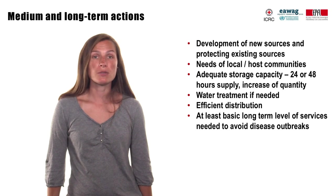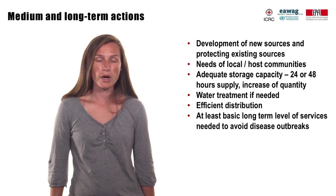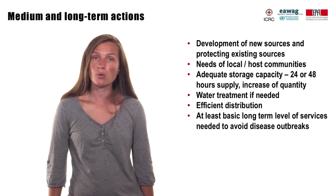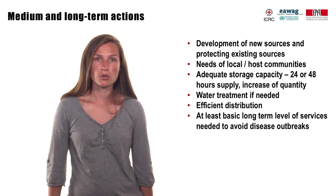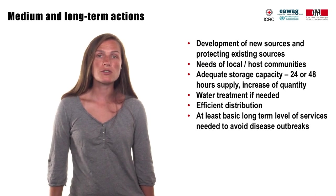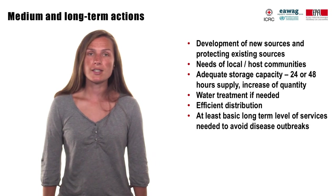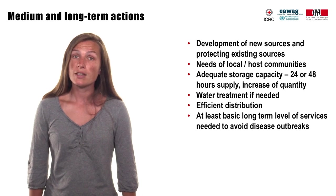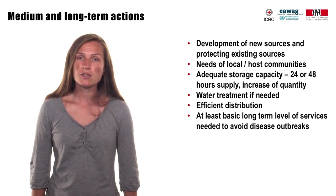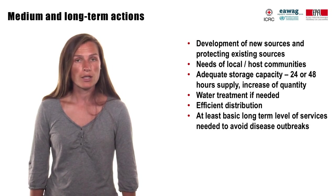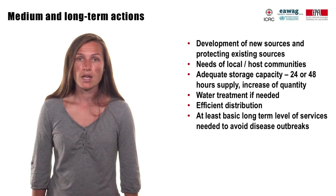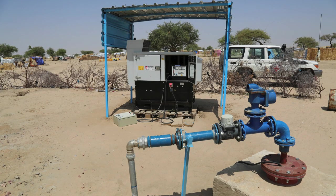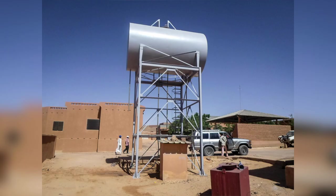When basic measures are in place, faster upgrading of the system can be required. Here we have to think beyond the water source only. A properly designed water supply and distribution system is often the next step, and planning early enough helps to avoid unnecessary efforts and expenditures for maintaining temporary, possibly fragile and unreliable infrastructure. In the case of displaced populations, we should consider the needs and situation of local communities and possibly upgrade services for them as well. Adequate source or multiple sources with proper intake structures, adequate storage capacity for uninterrupted water supply, as well as efficient distribution are the main components of the system.